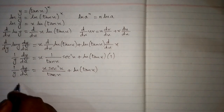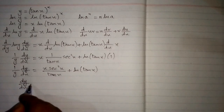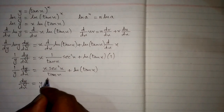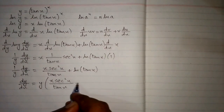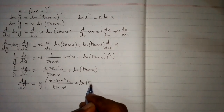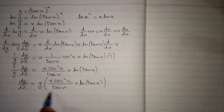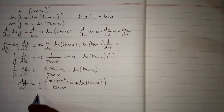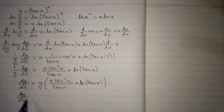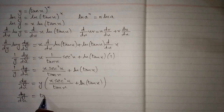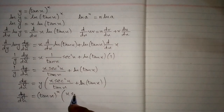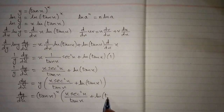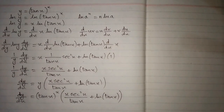Now we put the value of y which is 10x to the power x, so we have dy by dx is equal to 10x to the power x multiplied by x sec square x upon 10x plus ln of 10x. And this is the answer.